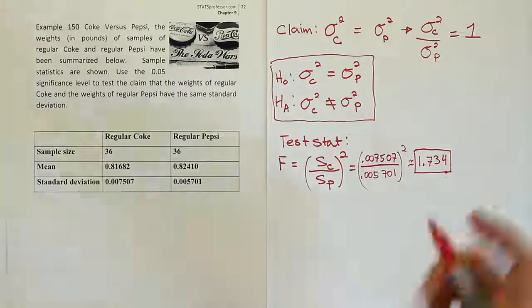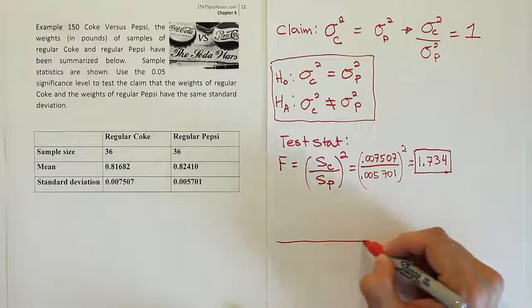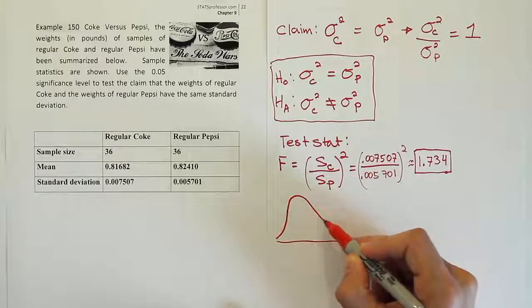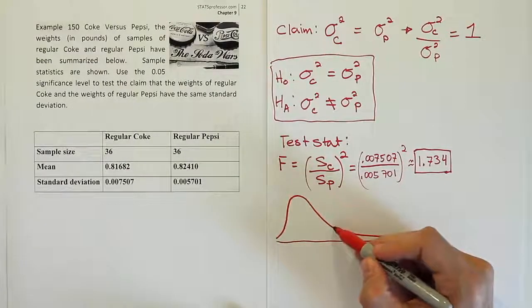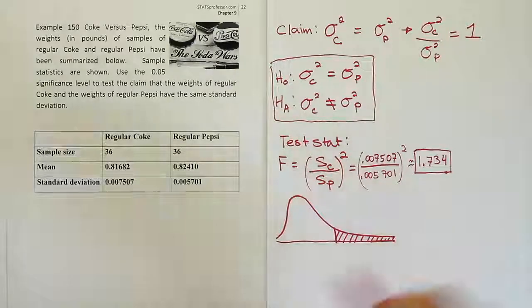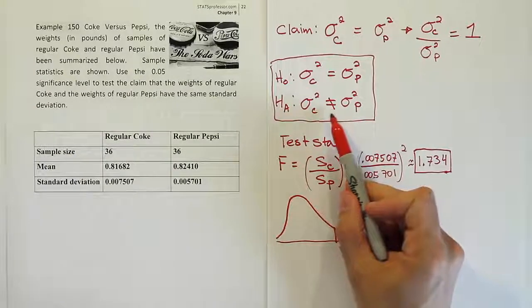Now remember, I need to compare that test stat against a critical value. So I'm going to draw the F bell curve, or it's not a bell curve, but the F curve. It's kind of like a skewed bell shape, a really skewed bell shape. Draw a tail here. And that tail is where the rejection region will lie. Now the key thing about this one, though, is that we're dealing with a two-tailed procedure.